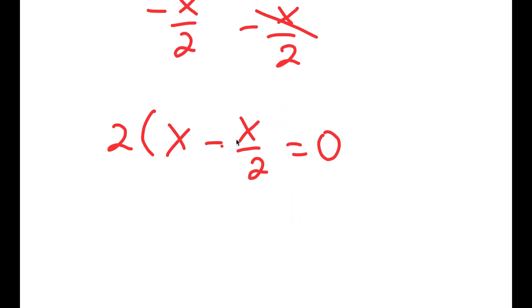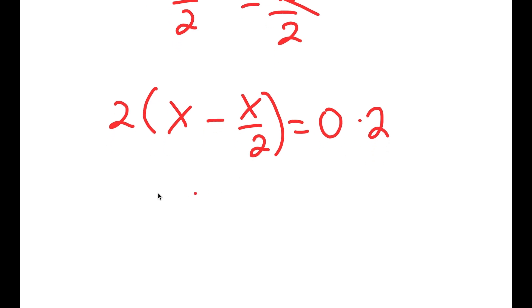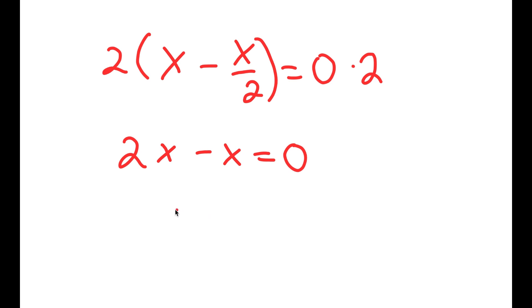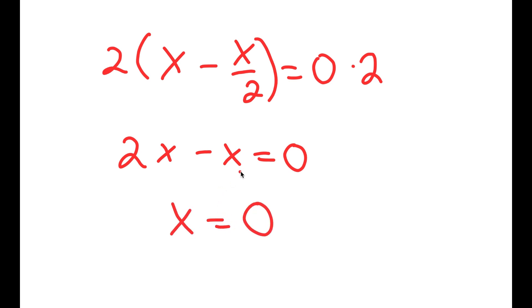And now I'm going to multiply 2 on both sides. So I get 2x minus x is equal to 0. And I get x is equal to 0. So it's the same thing again, using the same method.